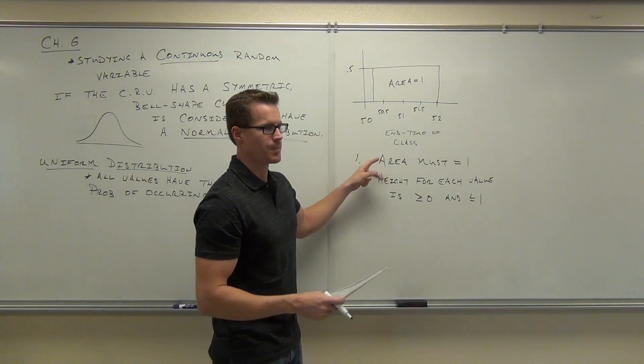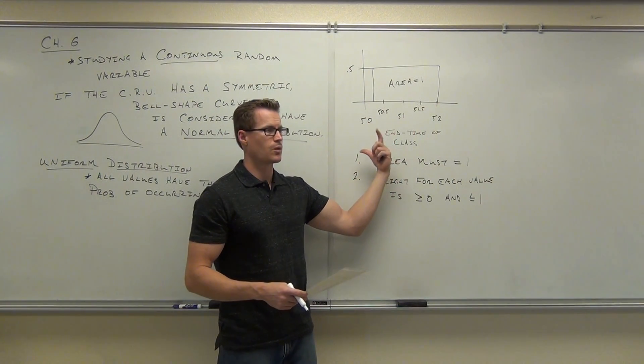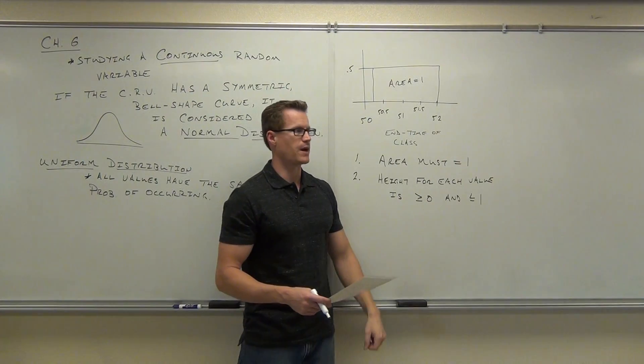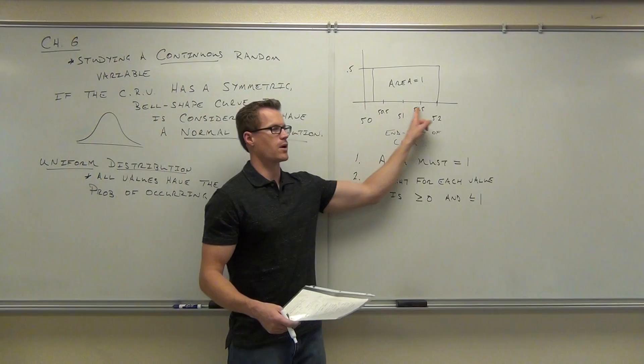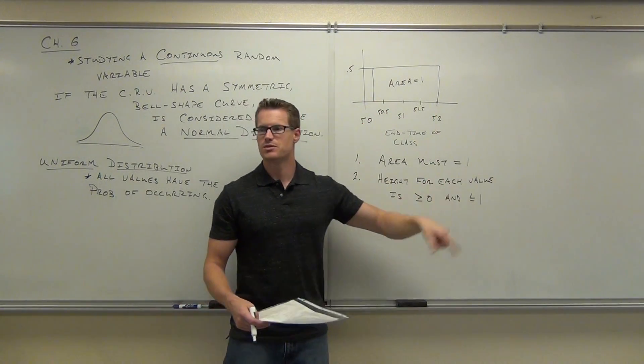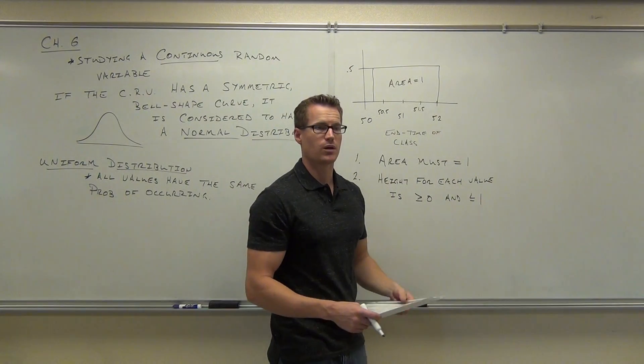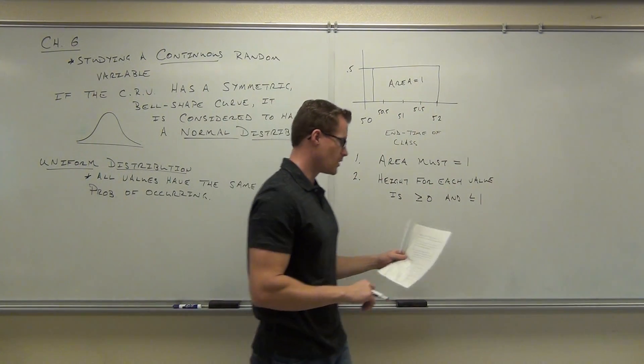These two conditions let our density curve, or our distribution, represent our probability. With that, it's equal to 1. Probabilities are equal to 1 if you add them all up. Look what we're doing. We're adding them all up, right? Add them all up. It's equal to 1. Also, each one has to be between 0 and 1. That's true for probabilities as well. That lets a graph represent probability for us. And it lets us solve this question.